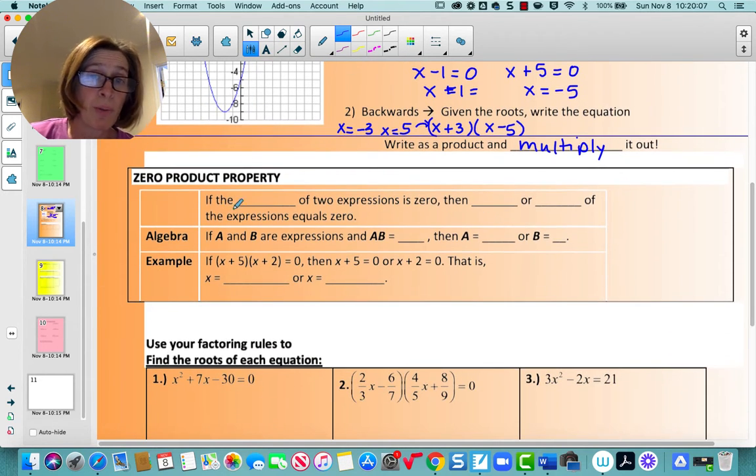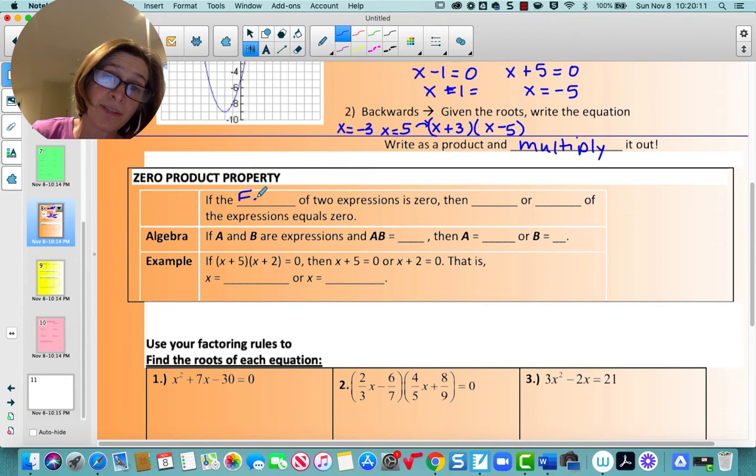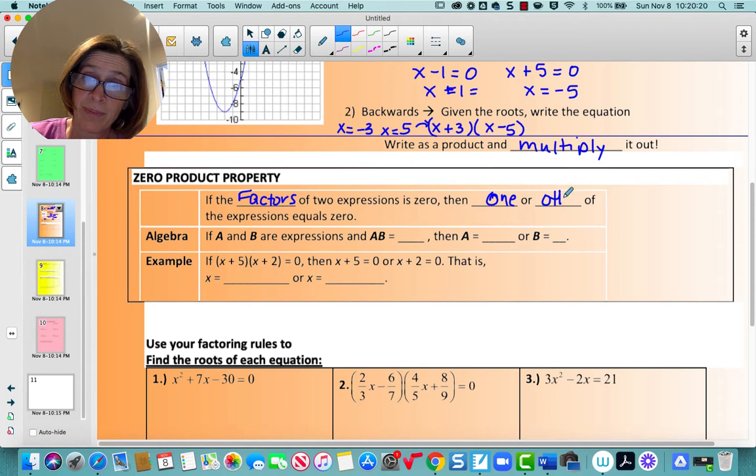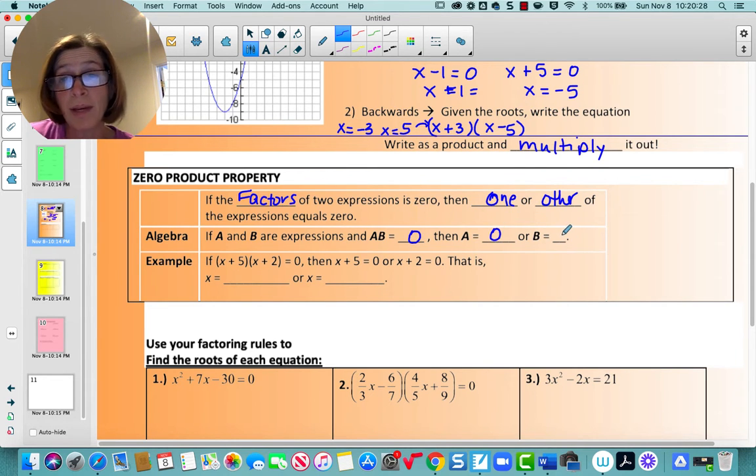But a reminder, the zero product property basically says if the factors of two expressions is zero, then one or the other of the expressions equals zero. In algebra, if a times b equals zero, then a equals zero or b equals zero.